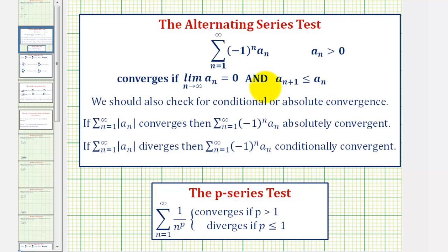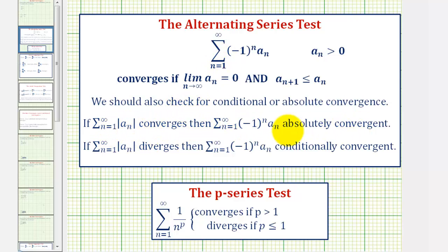If it does converge, we'll test for conditional or absolute convergence by determining if the summation of the absolute value of a sub n converges or diverges. If it converges, then the alternating series is absolutely convergent, and if it diverges, the alternating series is conditionally convergent.